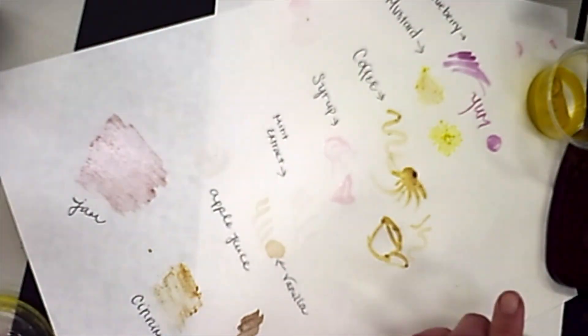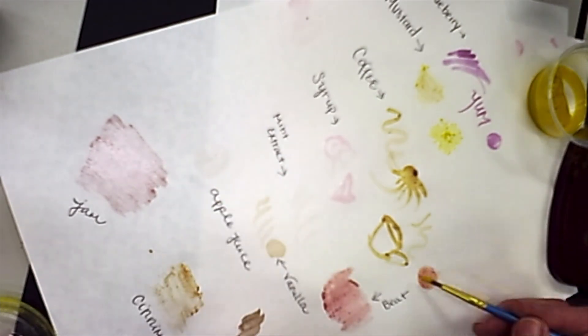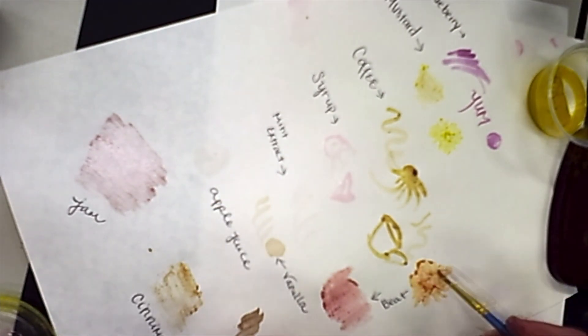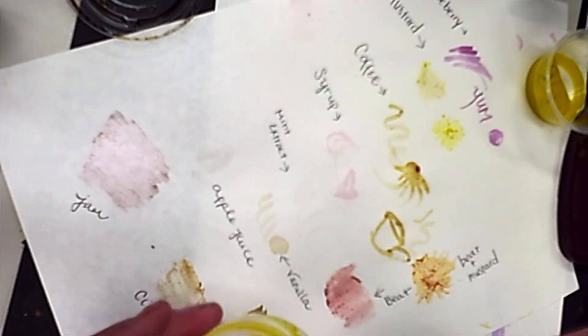This is beet powder and that worked super good. Beet juice from a real beet would work awesome. That one was beet mixed with mustard. I was trying to make orange.